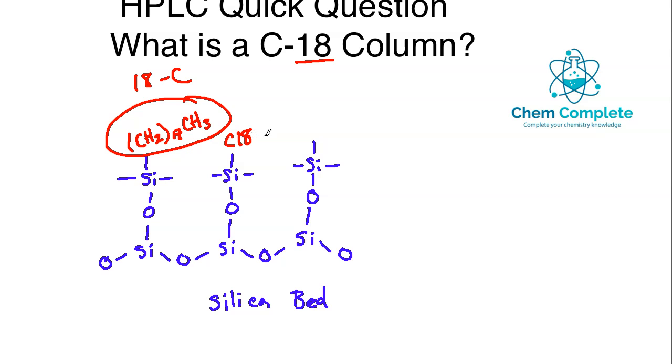And this would be applied along the entire chain. So for the sake of space, I'm just going to write C18 here. And then as you're moving along, you would have another C18 modification here. And when that occurs across the entire column bed, you call it a C18 column.